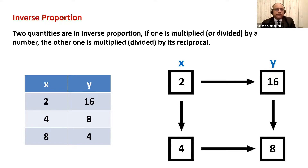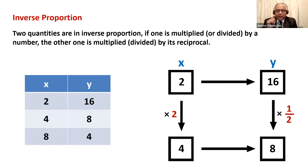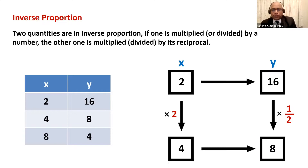Let's understand this table — the values are all in inverse proportion. Taking four values from the first two rows: 2, 16, 4, and 8. As x goes from 2 to 4, x gets multiplied by 2. But y gets multiplied by half — from 16 to 8, I need to multiply by half. So if x gets multiplied by 2, y gets multiplied by half, which is the reciprocal of 2. That's exactly what inverse proportion means, and these two quantities are confirmed to be in inverse proportion.